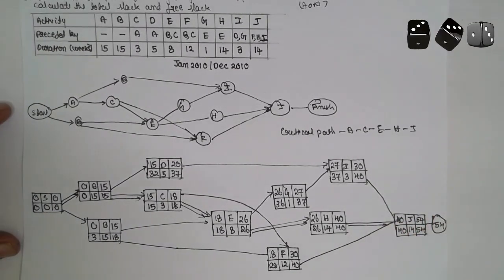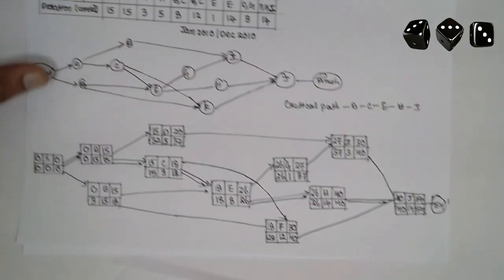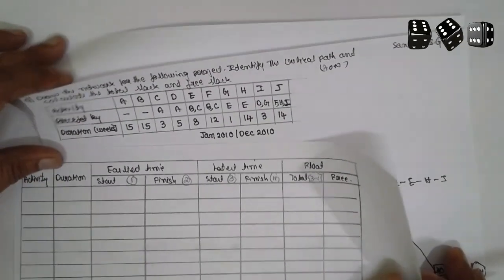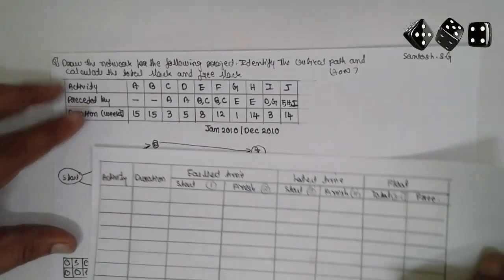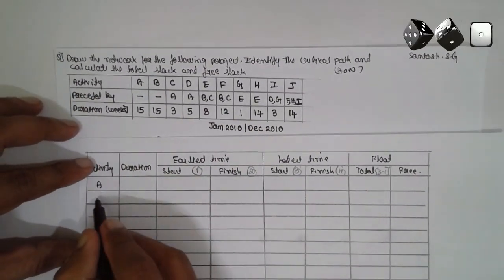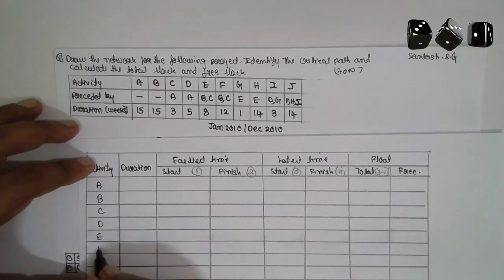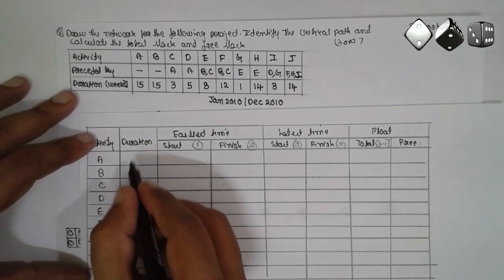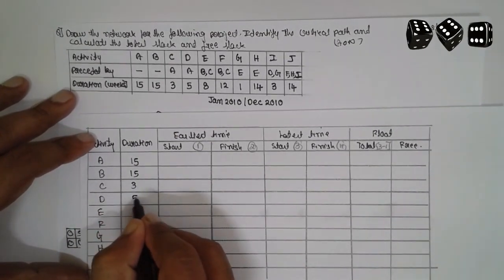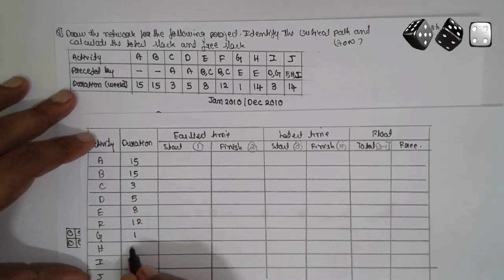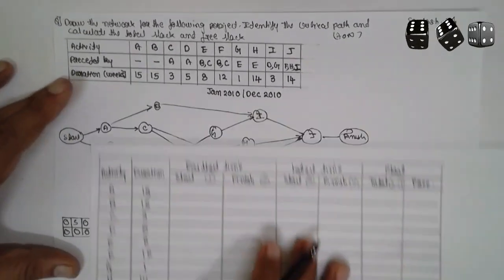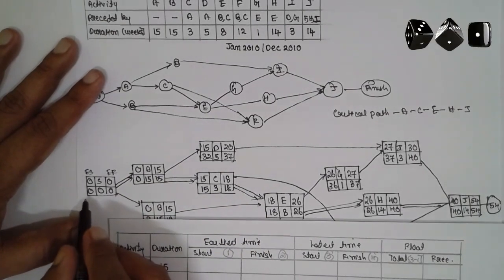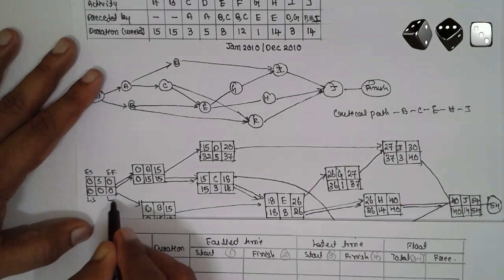Then I will go for the table. First I will write the activity here and draw the activities. Activity: A, B, C, D, E, F, G, H, I, and J. Next, duration. The columns are: earliest start time, earliest finish time, latest start time, and latest finish time.